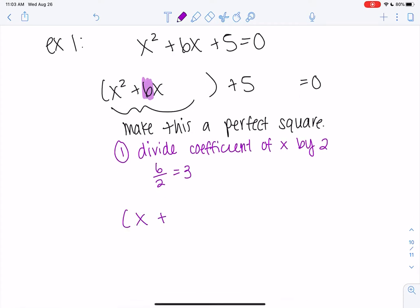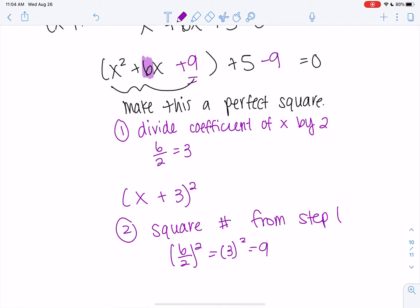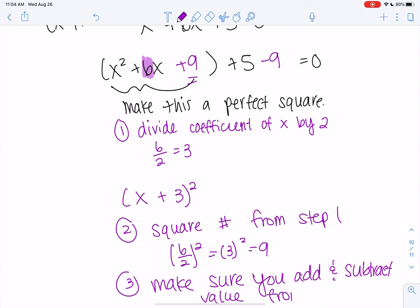It turns out that when we do factor it into a square it'll be x plus 3 squared but I'll show you why that works. And then the second step is we're going to square that number. So 6 divided by 2 squared or 3 squared is 9. And so the trick is if we add 9 this will create a perfect square. We can't just add 9 without subtracting it so make sure you also subtract that number. If I add it I have to also subtract it otherwise I've changed the equation.